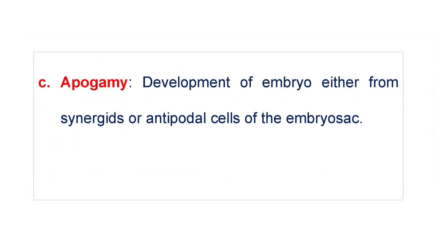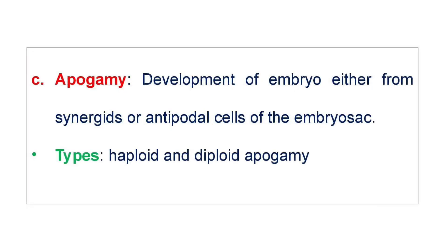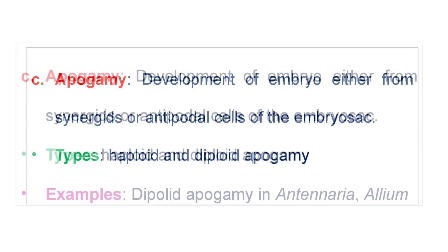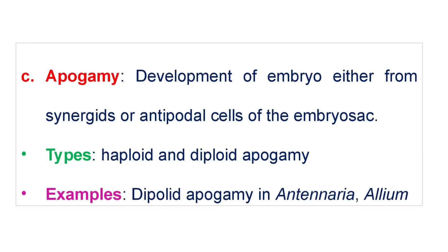Apogamy is the development of an embryo either from synergids or antipodal cells of the embryo sac. Apogamy is of two types: haploid and diploid Apogamy. Diploid Apogamy is seen in Antennaria and Allium species.